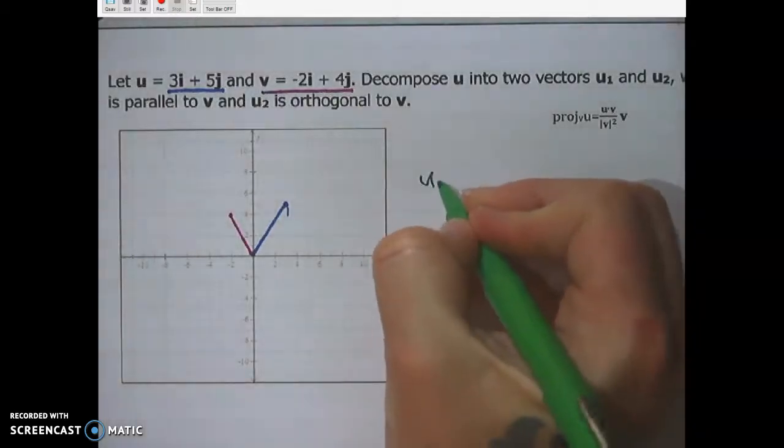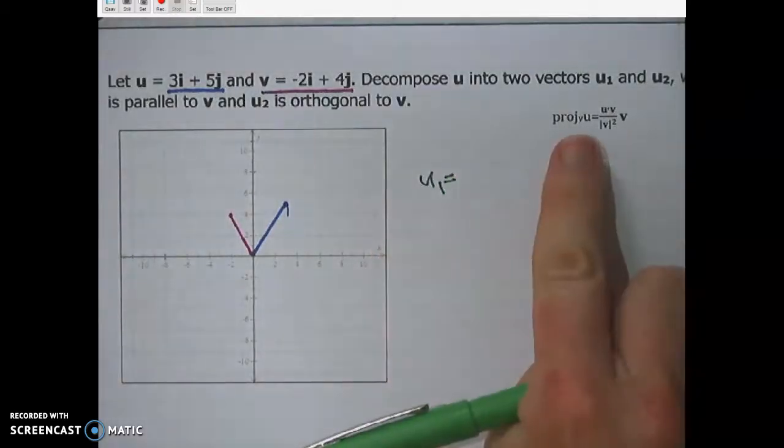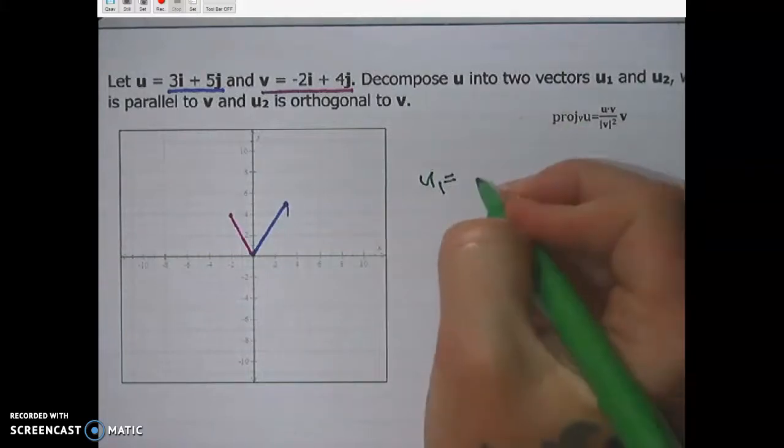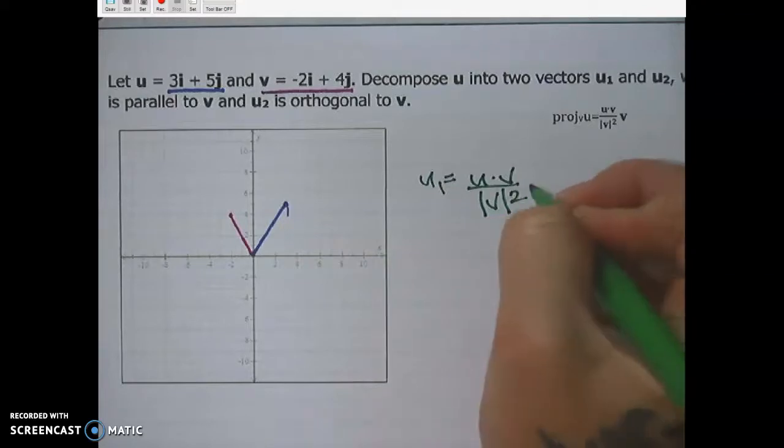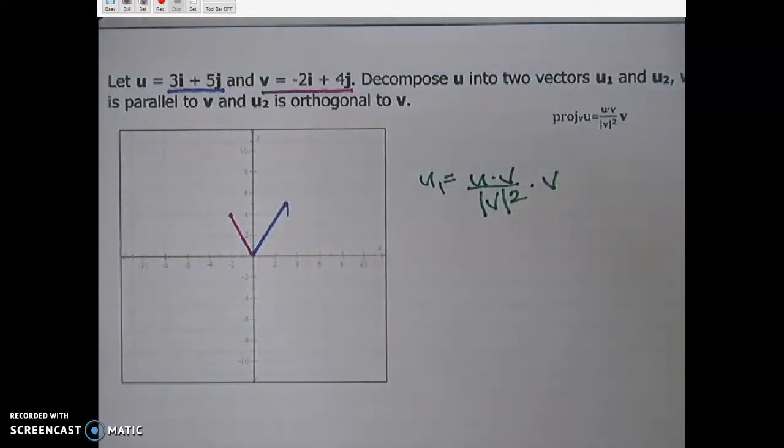So first, remember that for u1, that's what this projection formula is for, is for finding u1. So I'm going to have u dot v over the magnitude of v squared times v. And I'll go off to the side and do that and be right back.